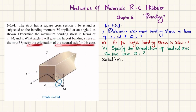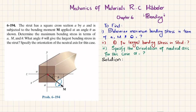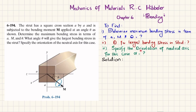We also need to find what angle theta gives the largest bending stress and specify the orientation of the neutral axis for that case. The square strut has side a by a and is applied with a moment at angle theta from the z-axis. Let's start with the solution.